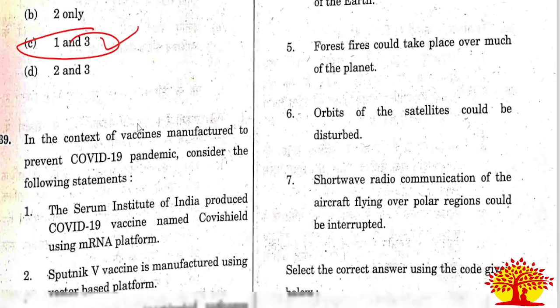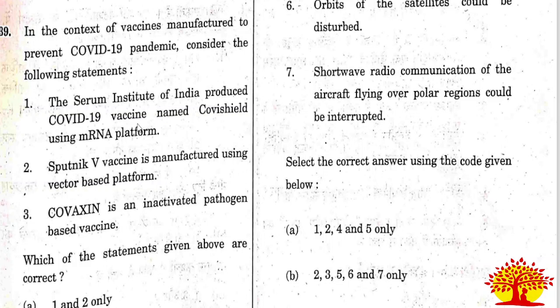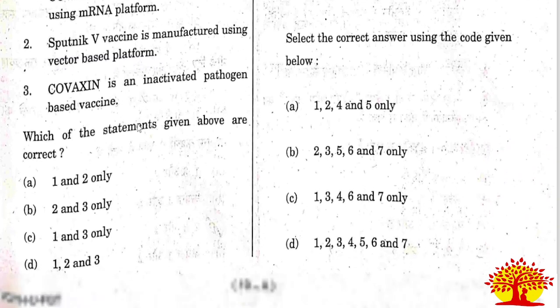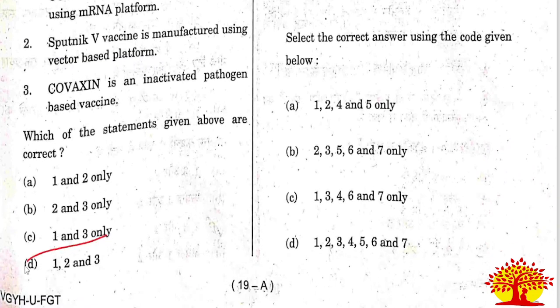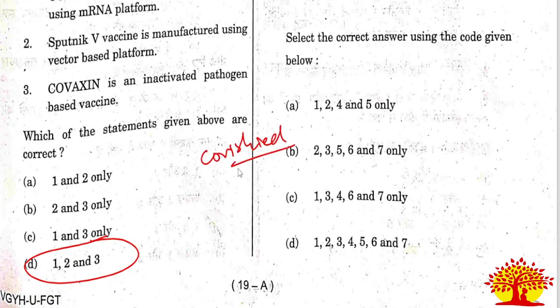Thirty-ninth question on COVID-19 vaccines: Statements 1, 2, and 3 are all correct. Covishield produced by Serum Institute of India used the adenoviral vector platform. Sputnik V from Russia was manufactured using a vector-based platform. Covaxin from Bharat Biotech is an inactivated pathogen-based vaccine. All three statements are correct. Option D is the right answer.